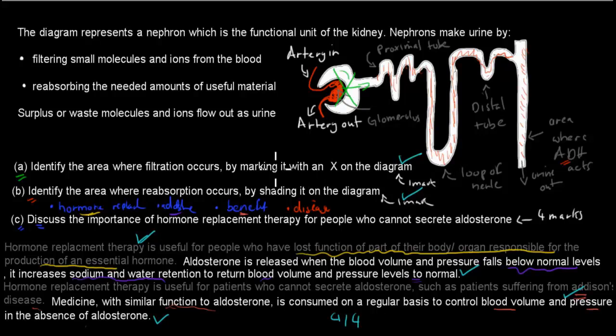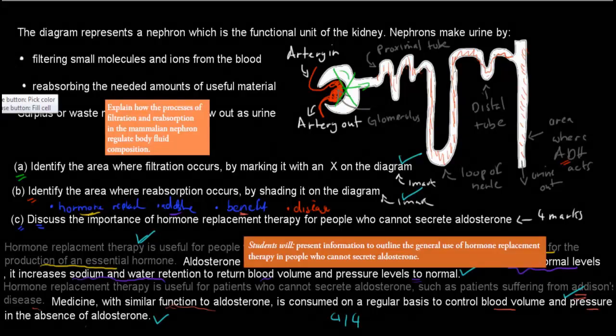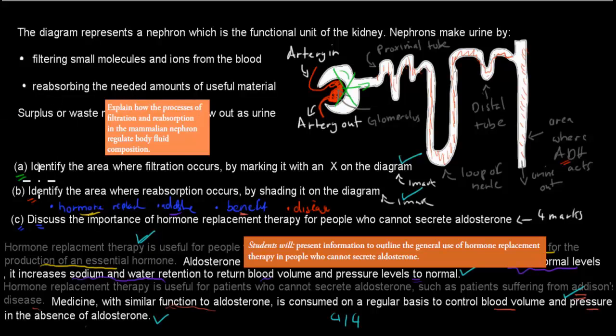And where do these questions come from? These come from these dot points. So the first one is Parts A and B: identify the area where filtration occurs and identify the area where reabsorption occurs. It comes from this dot point: explain how the process of filtration and reabsorption in the mammalian nephron regulates body fluid composition. So because of this dot point, you need to know where filtration and reabsorption occurs, and they can ask you that kind of question in the exam.